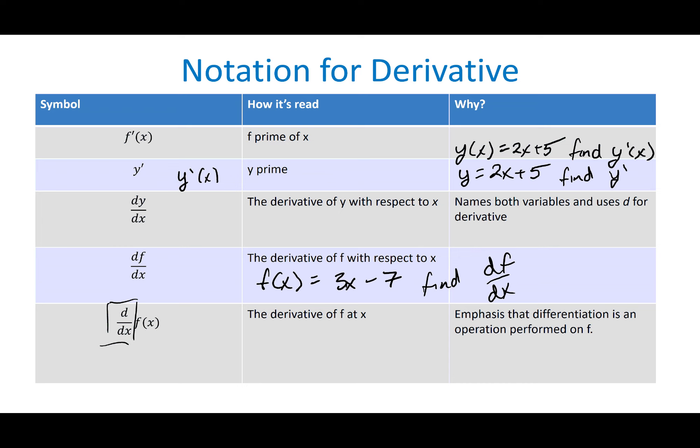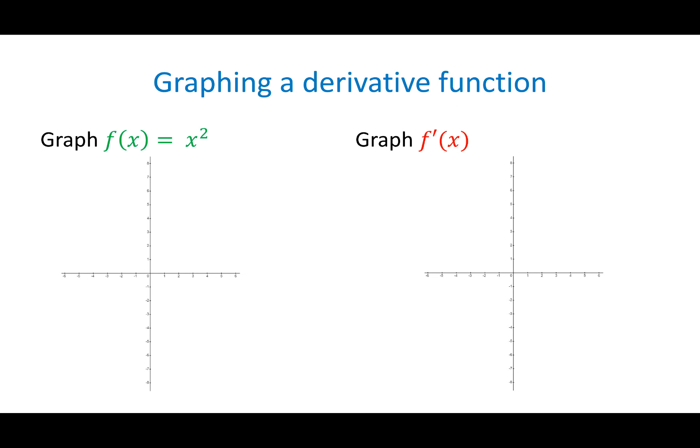Don't get confused by the notation or misunderstand it. Notation is going to come up and I'm going to emphasize when there are different notations — this means this. That's part of calculus; there's a lot of different notation. Unfortunately, it all means the same thing. Let's get into some graphing for a derivative function. A derivative function is simply representing the slopes — the many different slopes that are occurring on the original function F of X.